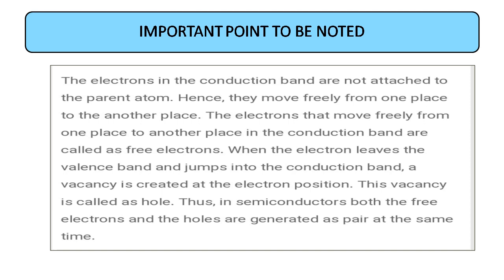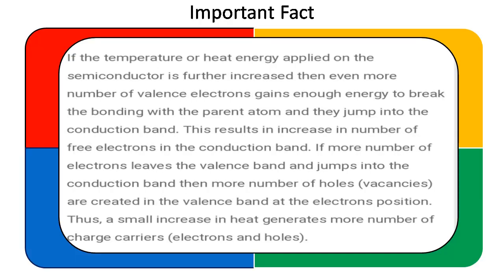The electrons that move freely in the conduction band are called free electrons. When an electron leaves the valence band and jumps into the conduction band, a vacancy is created. This vacancy is called a hole. Thus, in semiconductors, both free electrons and holes are generated as pairs at the same time.